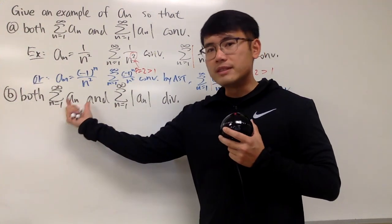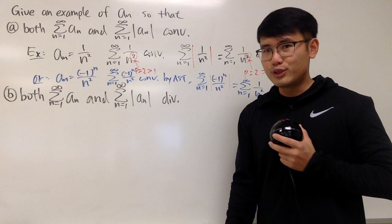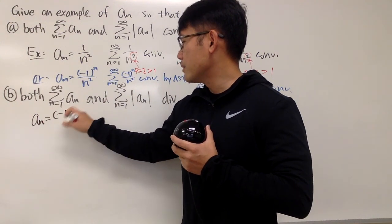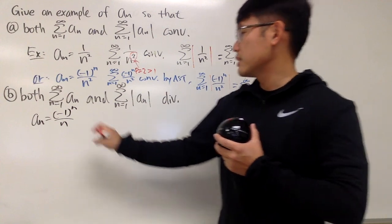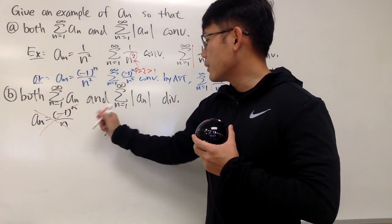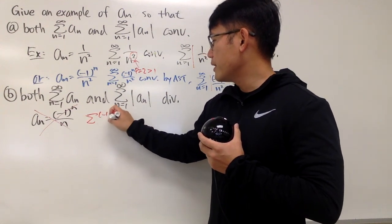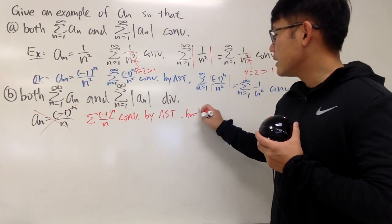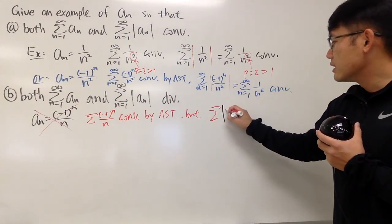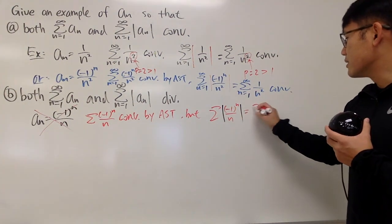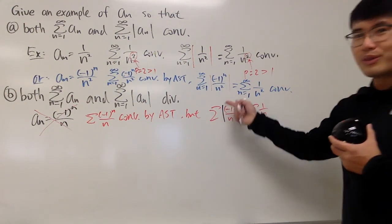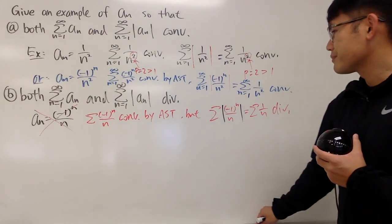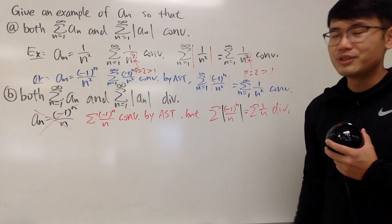For the second part, we want both the series of a_n and the series of the absolute value of a_n to diverge. If you try a_n = (-1)^n / n, that's not correct. The series of (-1)^n / n does converge by AST, but the series of |(-1)^n / n| — which is the harmonic series — diverges. So one converges and one diverges; this is not a valid example since we need both to diverge.